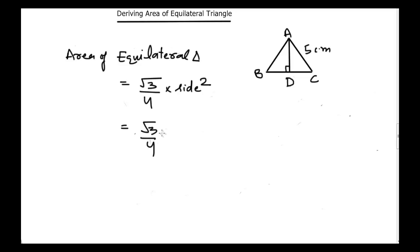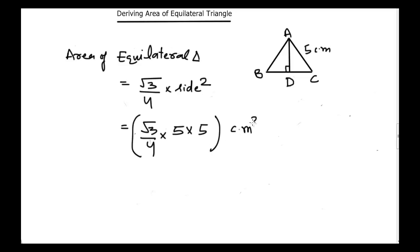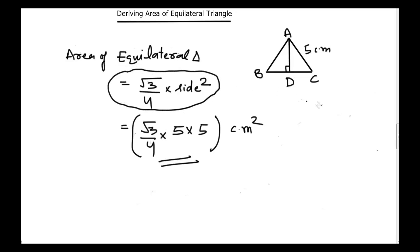Now let's suppose that triangle ABC is equilateral and its side is given to us — it's equal to 5 centimeters. We can find its area by using this formula. So area would be equal to square root of 3 divided by 4 times 5 times 5, and whatever answer we get, the unit would be centimeter squared. Now, from where do we get this formula? This video will be about deriving this formula.